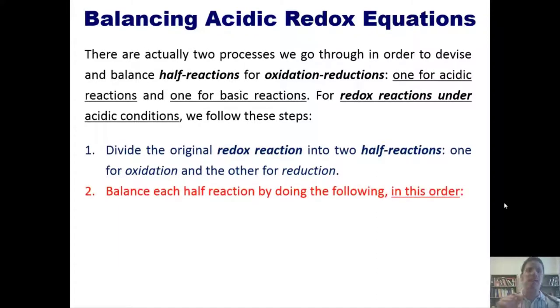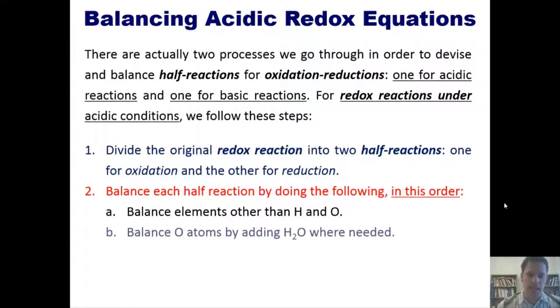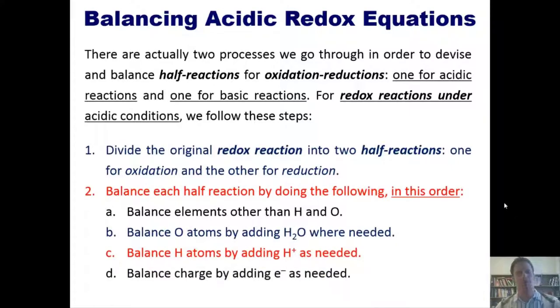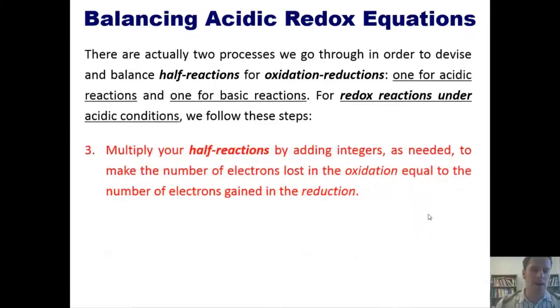Second, balance each half-reaction by doing the following in this order: (a) balance elements other than hydrogen and oxygen, (b) balance oxygen atoms by adding water wherever you have to, (c) balance hydrogen atoms by adding H+ as needed, and (d) balance charges by adding electrons where you need it. Third, multiply your half-reactions by adding integers as needed to make the number of electrons lost in the oxidation equal to the number of electrons gained in the reduction.